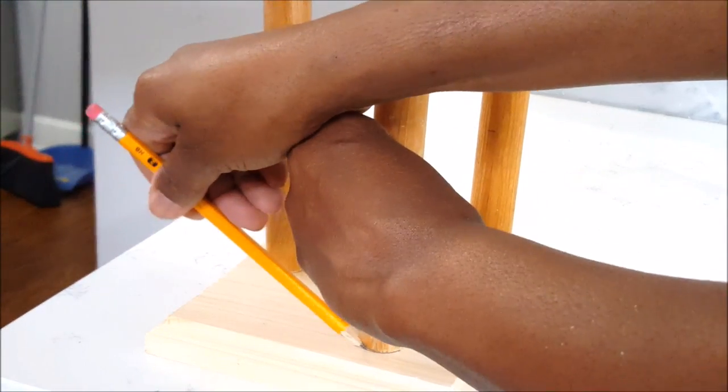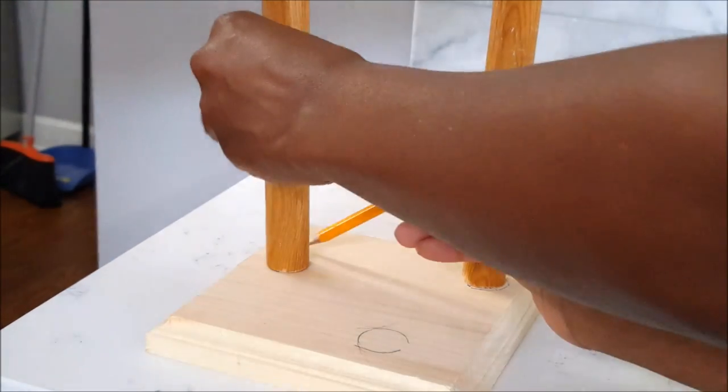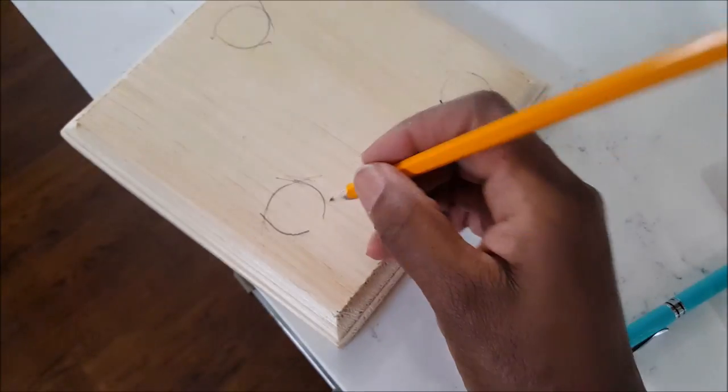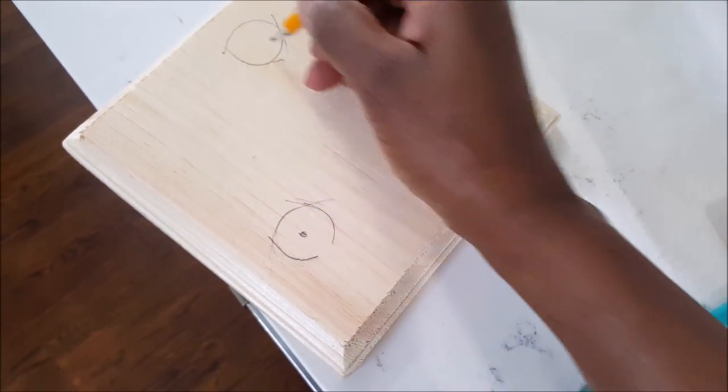And then what I did was just make little circles, outline where they're gonna be placed. Then in those circles I just put a dot in the center so I know where I'm going to be drilling through.